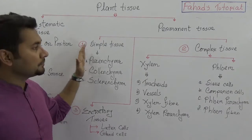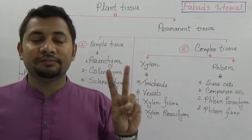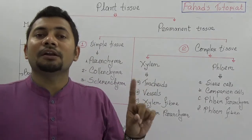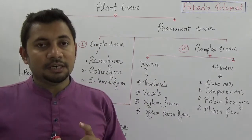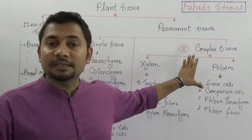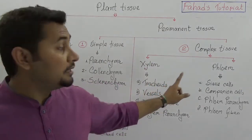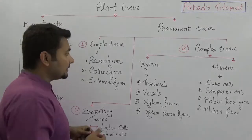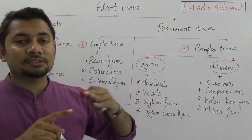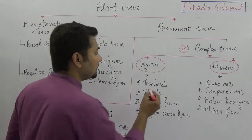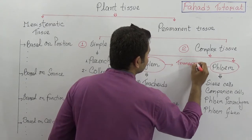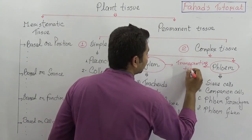In the case of complex tissue, it is again two different types: xylem and phloem. The definition of complex tissue is that they are not formed from similar types of cells — they form from different types of cells. These complex tissues are two types: number one, xylem; and number two, phloem. You must know that xylem and phloem are the transporting tissues, responsible for transporting foods, minerals, and salts.